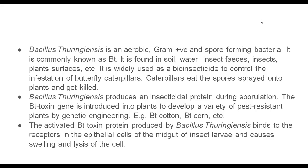The insecticidal protein is produced in the crystal body. Very simply, it is a Bacillus thuringiensis gene that produces a toxin, and it is a gene incorporated into the plant. Now, insects attack genetically engineered plants and that toxin is produced — it is a pest-resistant genetically engineered plant. So Bt-toxin is used to produce BT cotton, BT corn, BT brinjal, and BT tobacco.